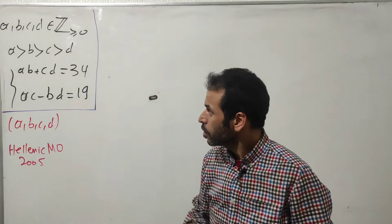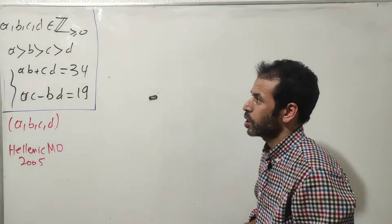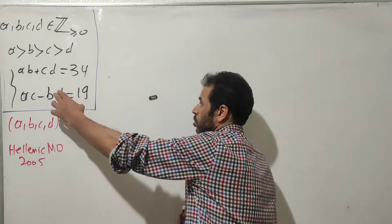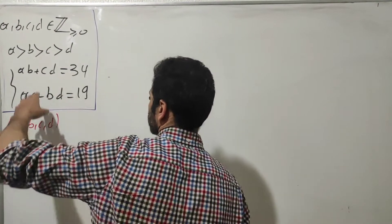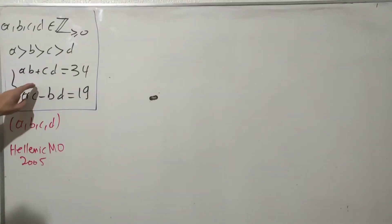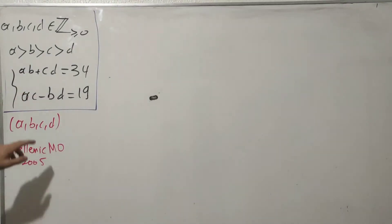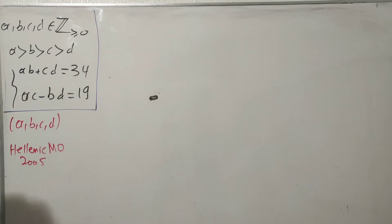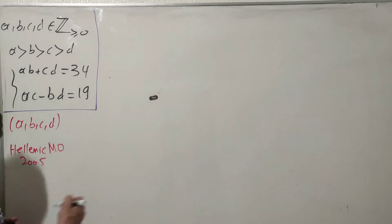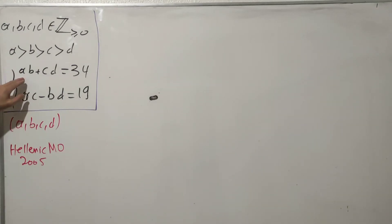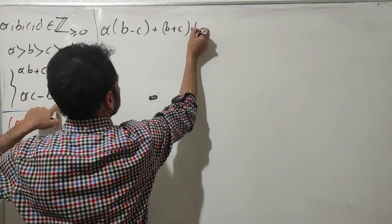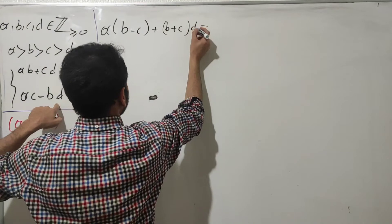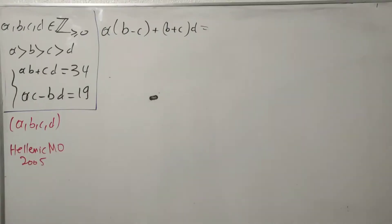Let's proceed with the solution. We are going to use the ordering condition to solve this system. First, we make a linear combination — multiplying and taking the difference between the two equations — to obtain a new form. Multiplying by d and taking the difference gives us 34 minus 19, which is 15.